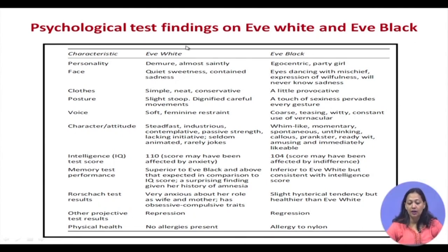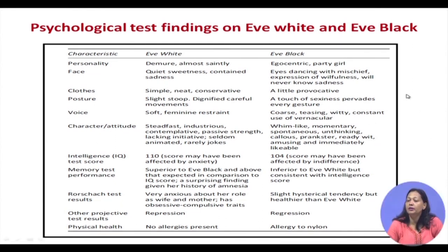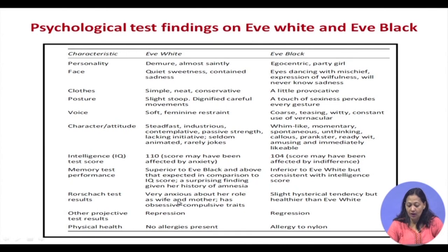The psychological test findings showed that Eve White had an IQ of 110 while Eve Black displayed an IQ of 104. Eve White's personality was demure, almost saintly, while Eve Black was egocentric and a party girl — her eyes would dance with mischief and she would never know sadness. Eve White was quiet, sad, simple, neat, and conservative, while Eve Black's dressing was more provocative. Projective tests showed Eve White was very anxious about her role as wife and mother and displayed obsessive-compulsive traits, while Eve Black was slightly hysterical but displayed more healthy, normal traits than Eve White.